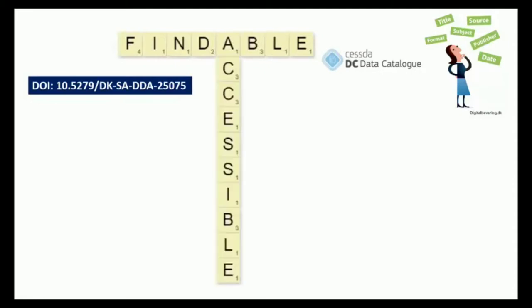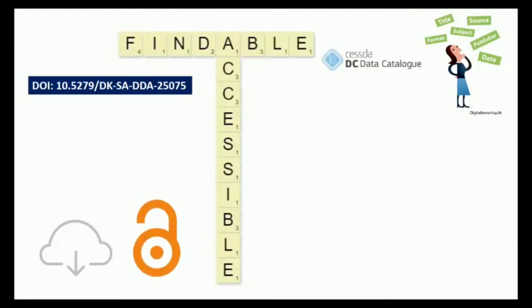Data being accessible means that they can be retrieved via the identifier through an open protocol. This may require authentication and authorisation.